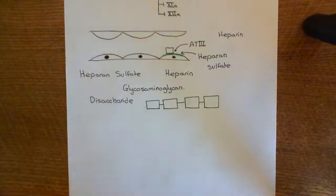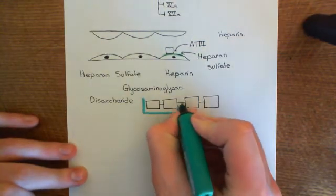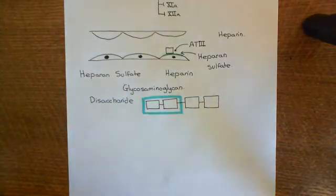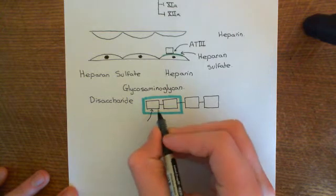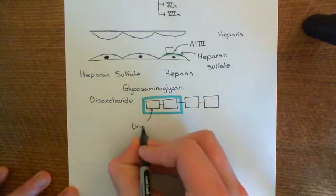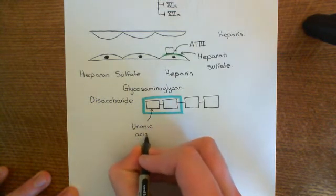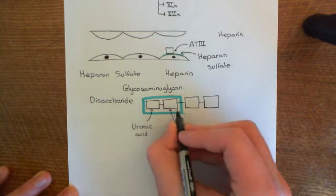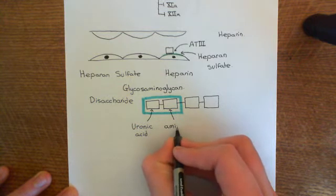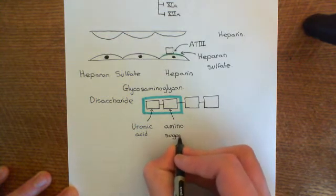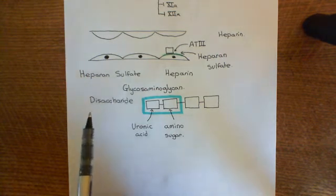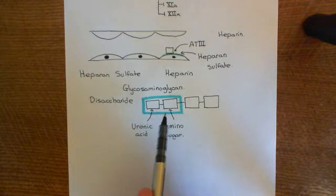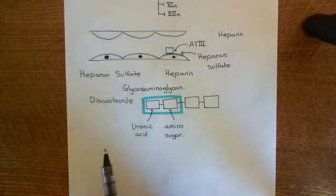Let's look at the disaccharide units used in these glycosaminoglycans. Each disaccharide consists of two sugars: in the first position you generally have a uronic acid sugar, and in the second position you generally have an amino sugar. Since this is heparan sulfate, these sugars will often have sulfate groups added onto them.